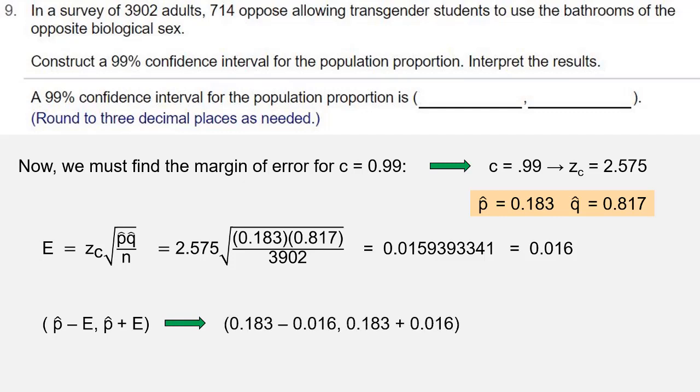and then p-hat plus the error, 0.183 plus 0.016, which gives us 0.167 to 0.199. That's our 99% confidence interval.